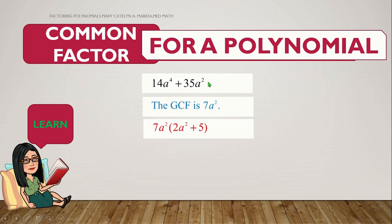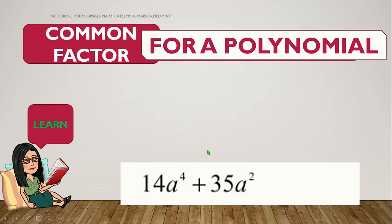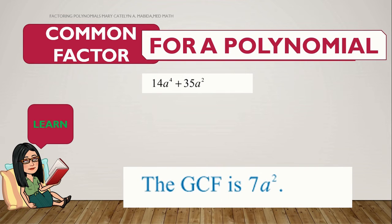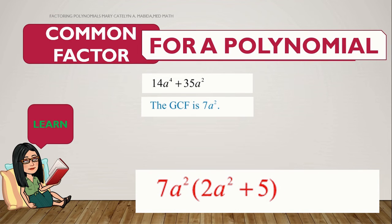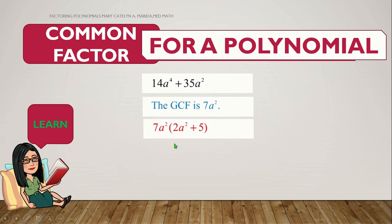Again, our polynomial is 14a to the 4th plus 35a squared. We factored it out using its common monomial, which is 7a squared. And we get 7a squared times the quantity of 2a squared plus 5. One more time. 14a to the 4th plus 35a squared. The GCMF is 7a squared. And our factored form is 7a squared times the quantity of 2a squared plus 5. Now, let us try more monomials.